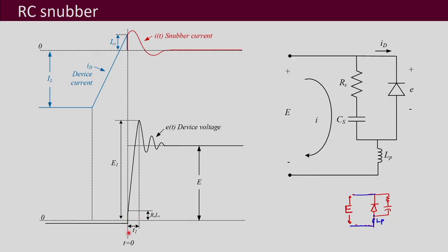One important term is time T1, which is the time the device voltage takes to reach the peak value E1. The different terms important to remember are: E1 the peak voltage, the time T1, the initial voltage RS*IRR, and the voltage across the capacitor VCS = 0 at t = 0. The initial current I0 equals IRR. We do the snubber analysis by analyzing this RLC circuit — solving for the snubber current I(t) and from there obtaining the device voltage e(t).